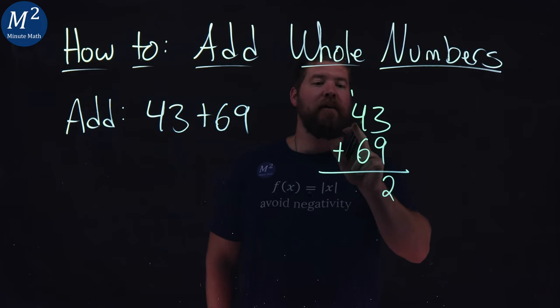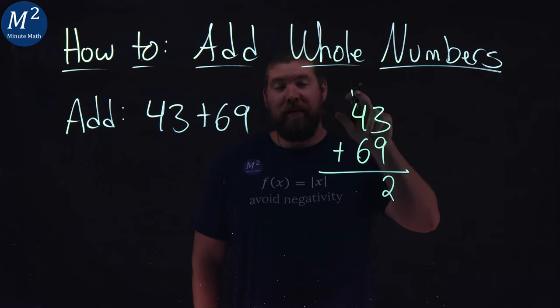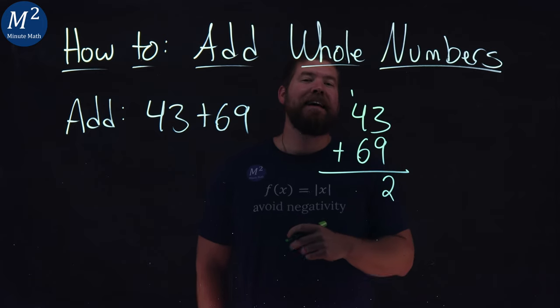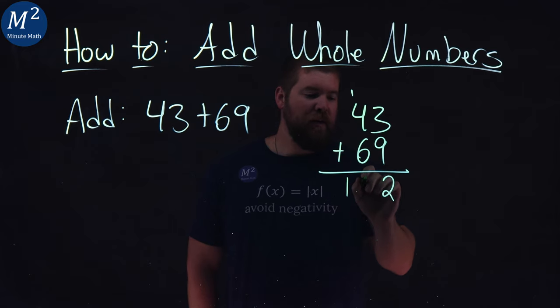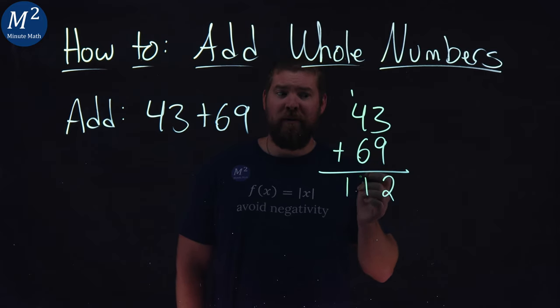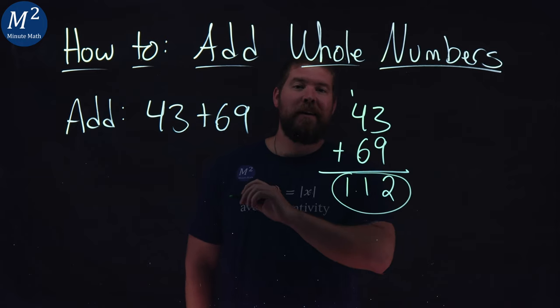From there we have six and four add together to be a ten plus this extra one that we added right there is a good old eleven. And so eleven comes down here, and there we have it. Forty-three plus sixty-nine is one hundred and twelve.